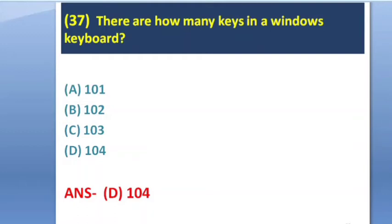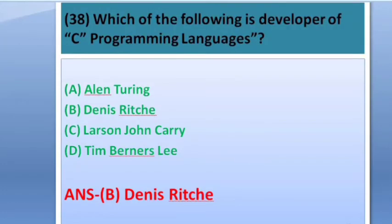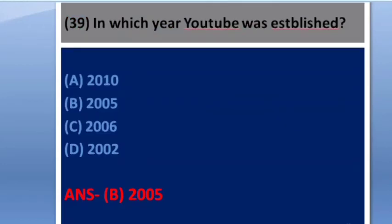Next question: How many keys are there in a Windows keyboard? Options: A — 101, B — 102, C — 103, D — 104. The answer is option D — 104. Next question: Who is the father of the C programming language? Options: Alan Turing, Dennis Ritchie, Larson, Johnny Carey, Tim Berners-Lee. The answer is Dennis Ritchie.